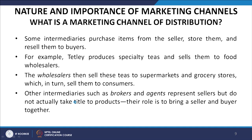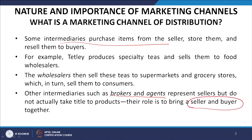Some intermediaries purchase items from sellers, store them, and resell to buyers. For example, Tetley produces specialty teas and sells them to food wholesalers, who then sell to supermarkets and grocery stores, which in turn sell to consumers. Other intermediaries such as brokers and agents represent sellers but do not take title of the product — their role is simply to bring a seller and a buyer together.